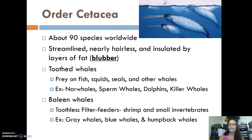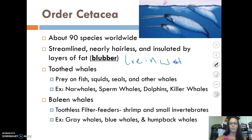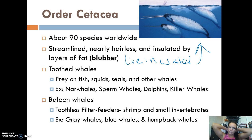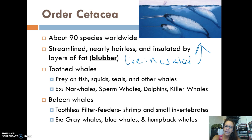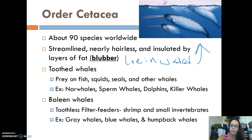Order Cetacea has only about 90 species worldwide, but they are known for being nearly hairless with lots of blubber and a streamlined body because they live in water. All cetaceans live in water, and there are two types: toothed whales and baleen whales. Toothed whales are large carnivores that feed on fish, squid, seals, other whales, and dolphins — examples include narwhals, sperm whales, dolphins, and killer whales. Baleen whales are filter feeders without teeth; they eat shrimp and small invertebrates filtered through their baleen. Examples are gray whales, blue whales, and humpback whales.